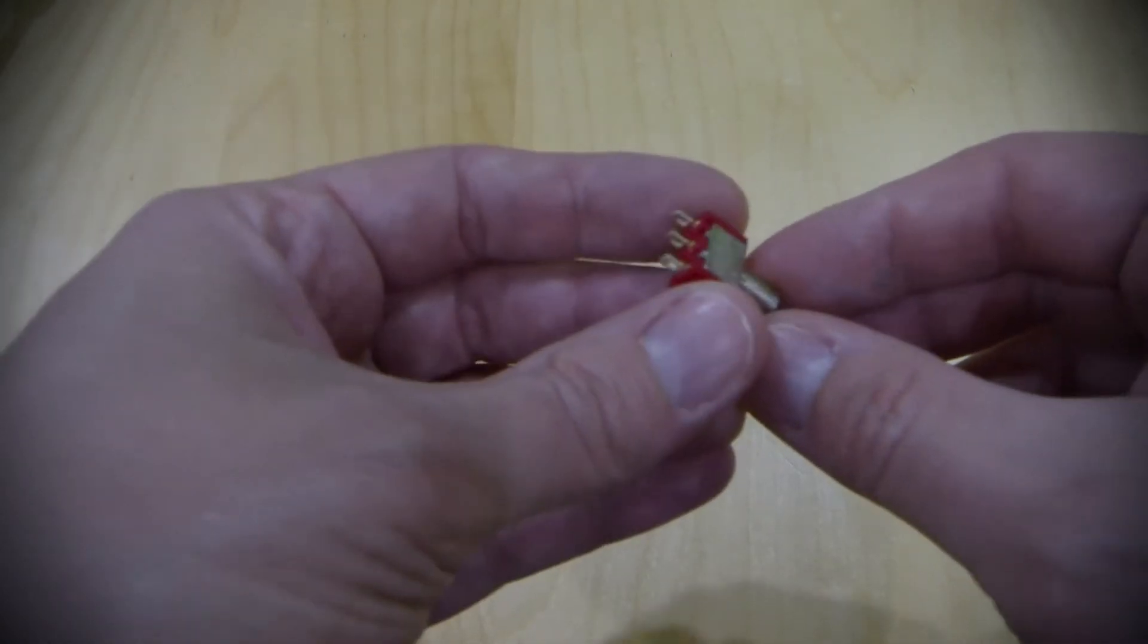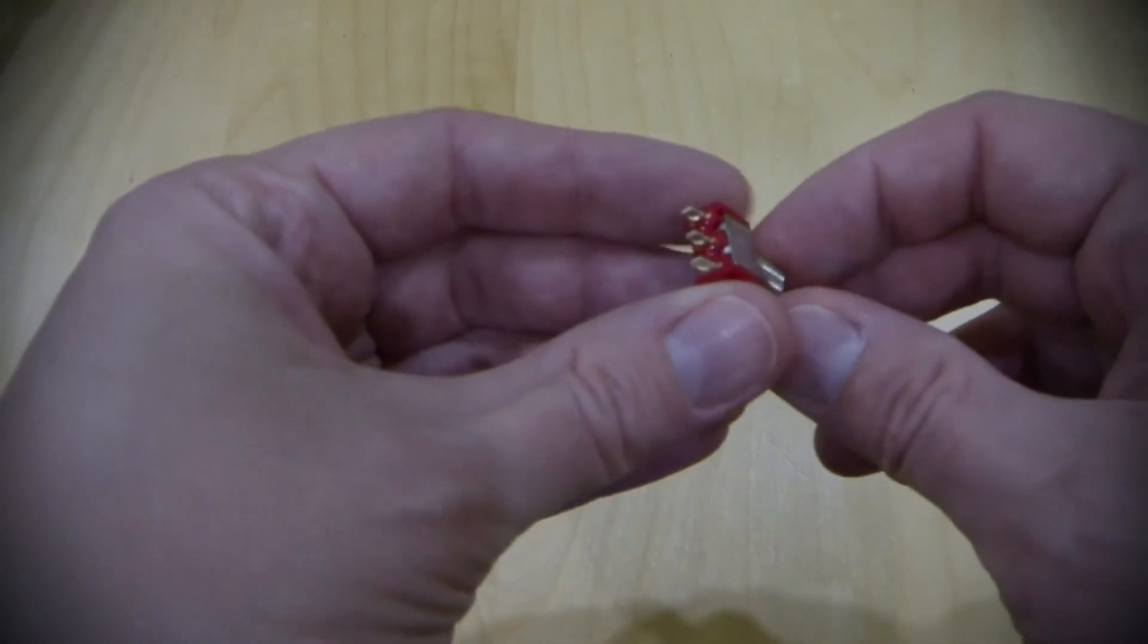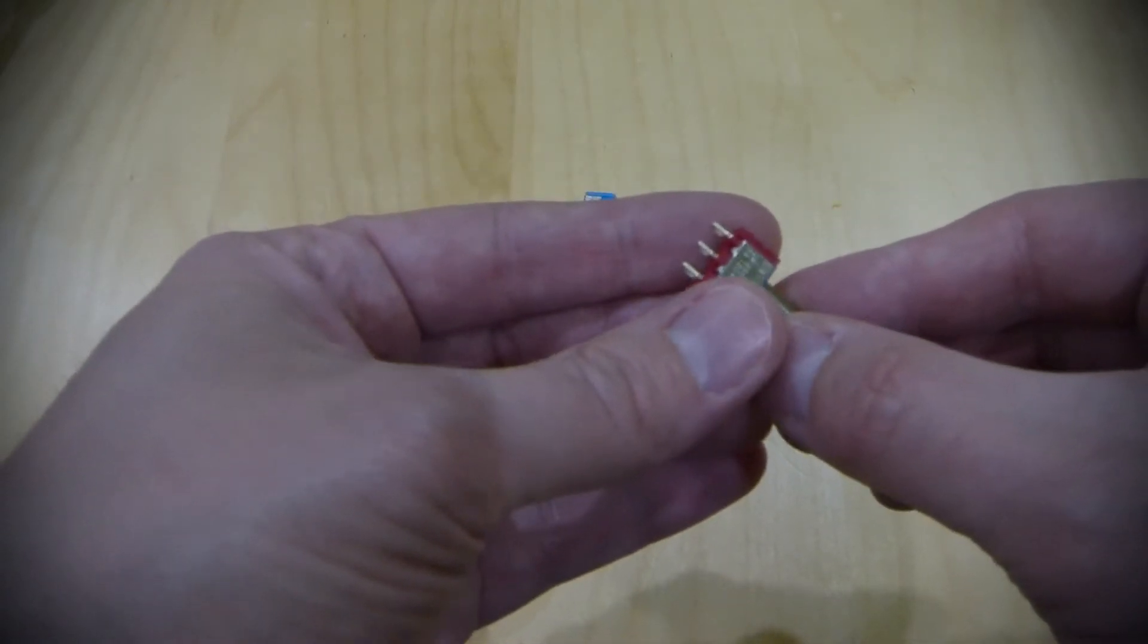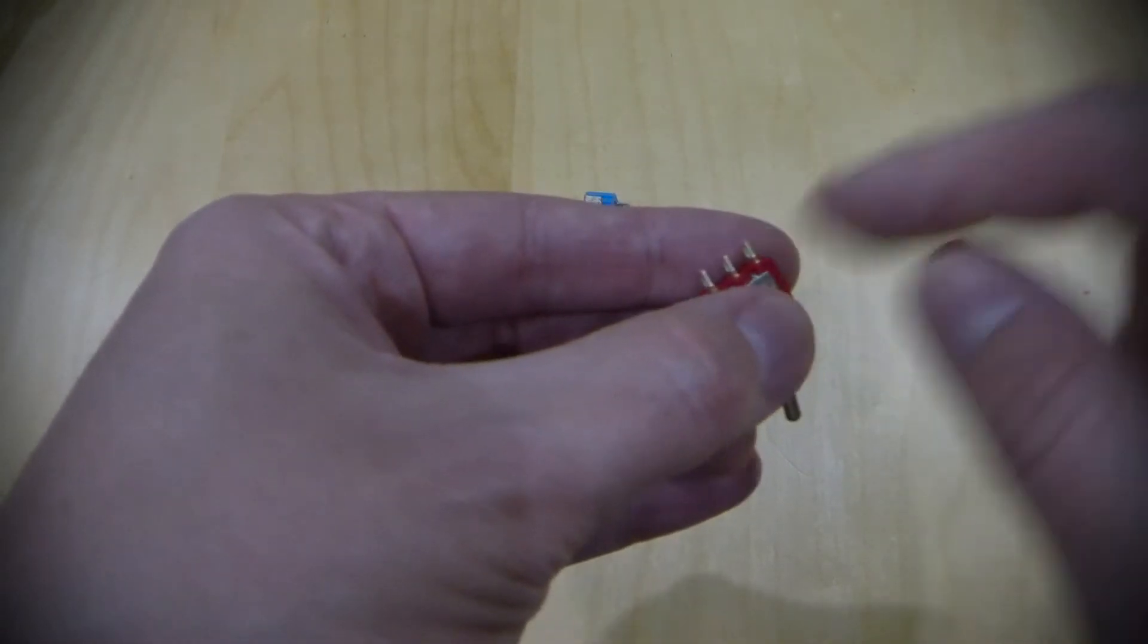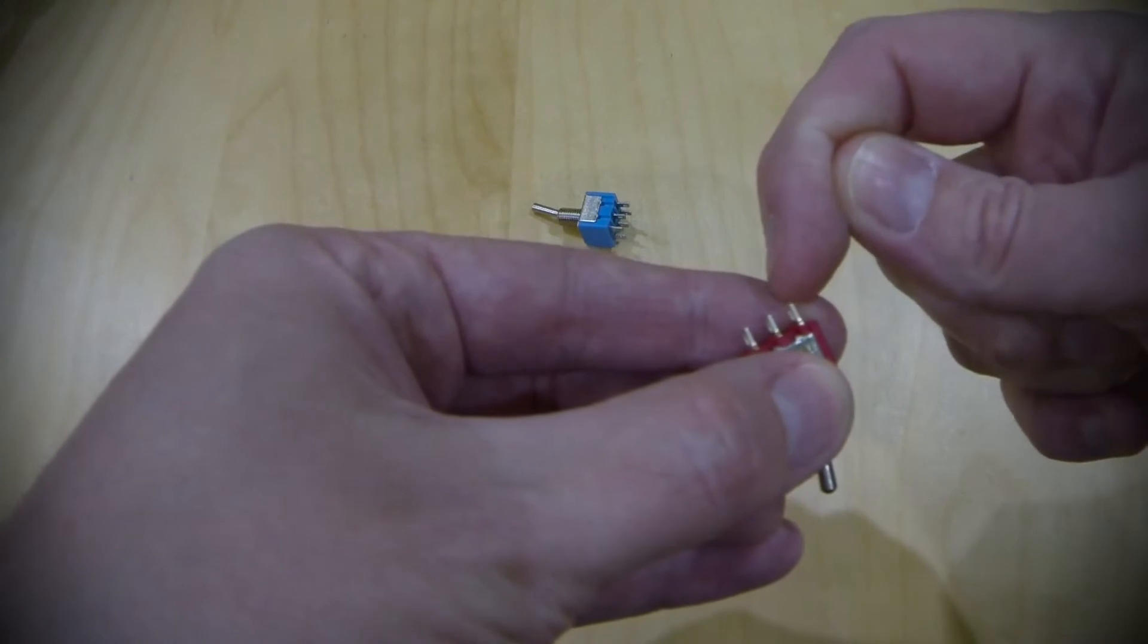Now the throw means how many different connections you are making on each of the poles. So this is a double throw switch, which means this single pole has two different connections that can be made. This pin is one connection, this pin is another connection.